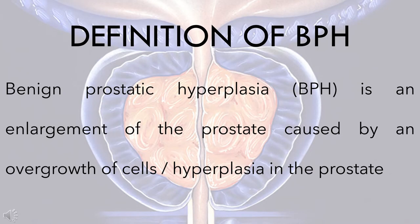Benign prostatic hyperplasia, or BPH, is an enlargement of the prostate caused by an overgrowth of cells, or hyperplasia, in the prostate.